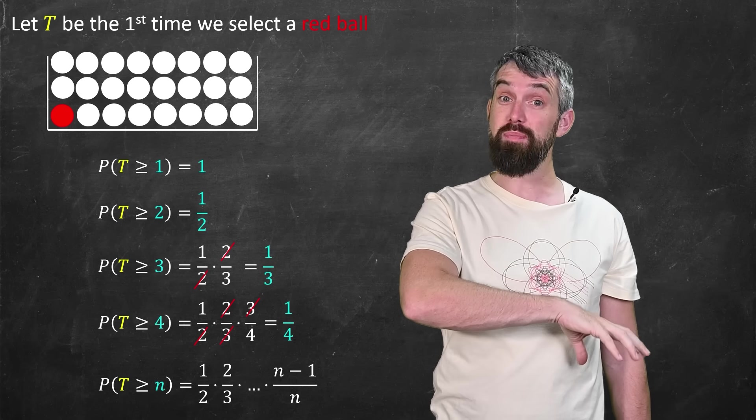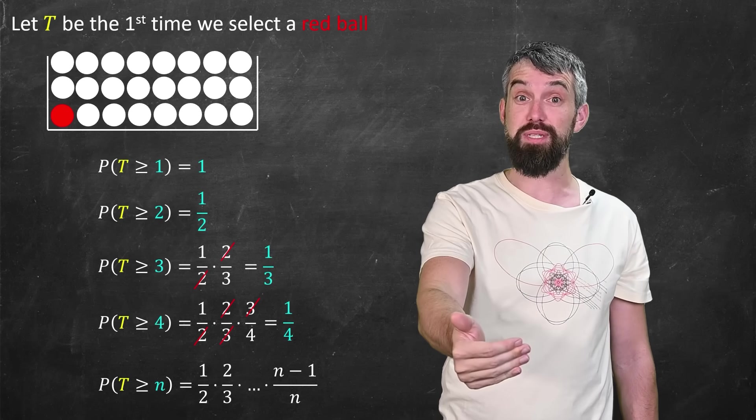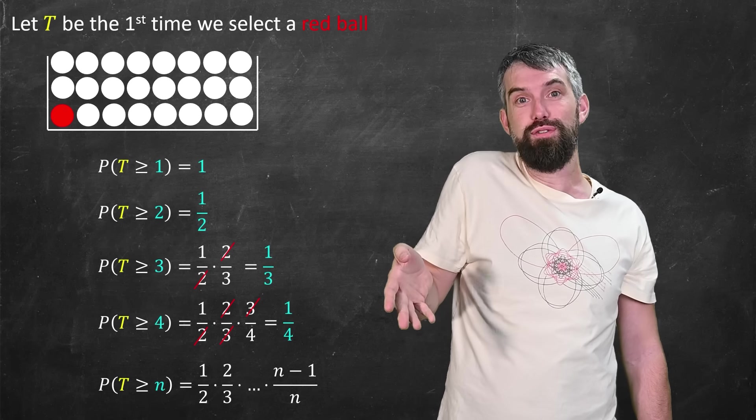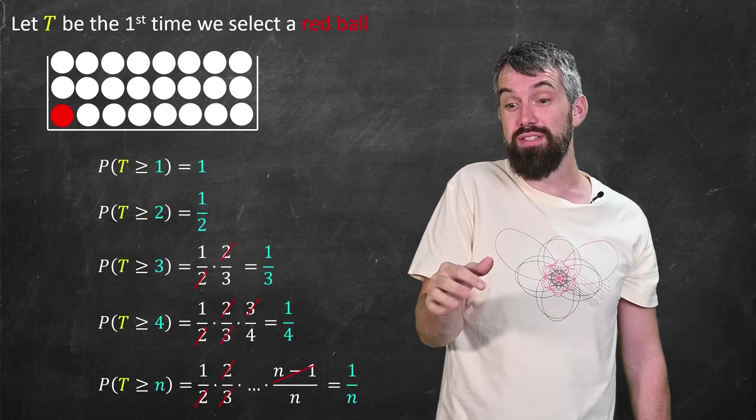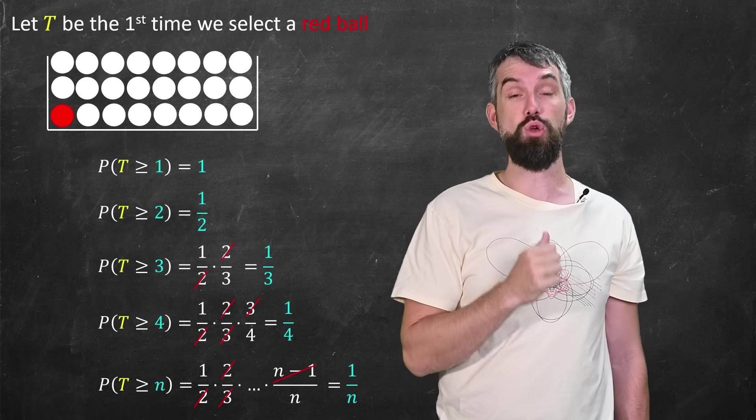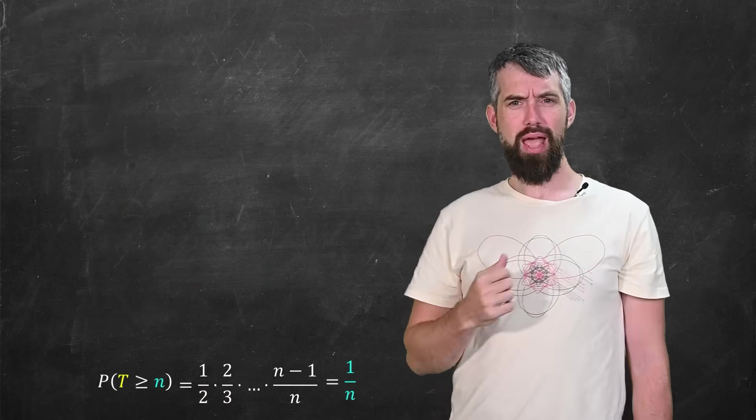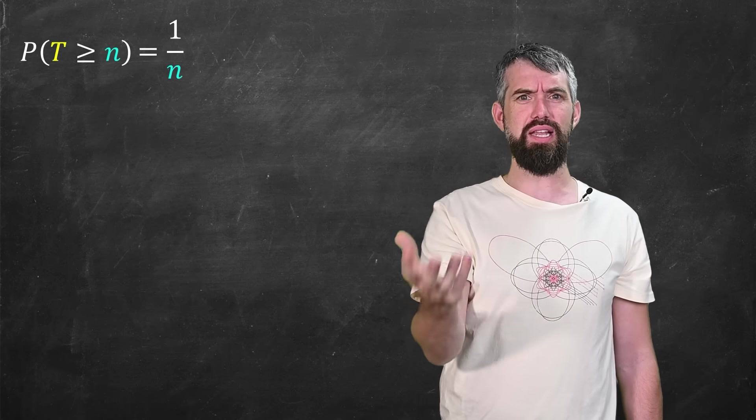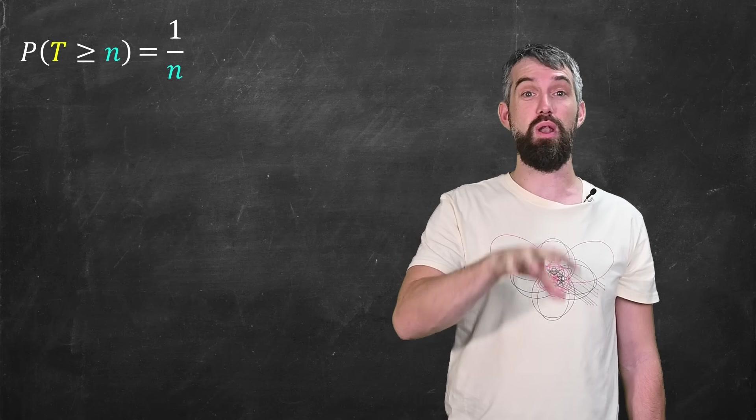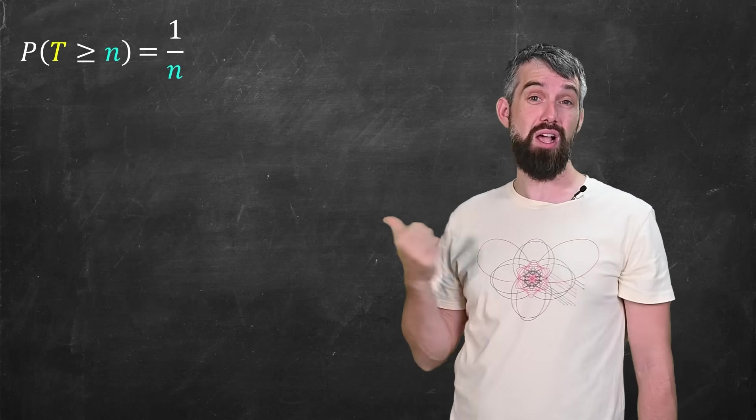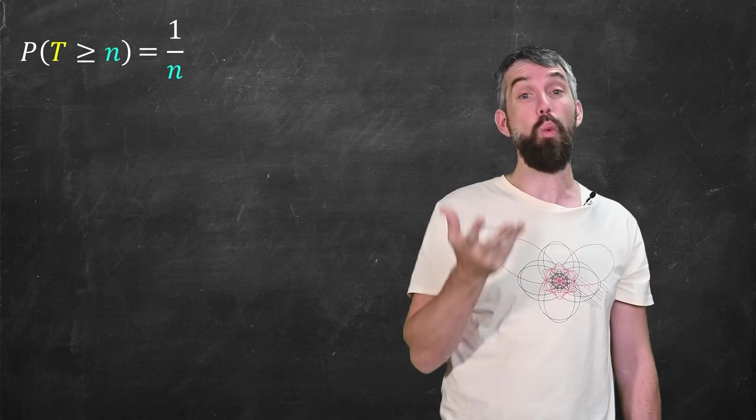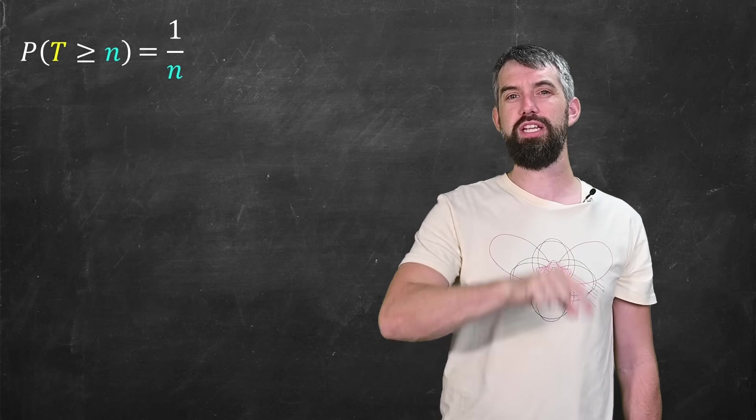And now I think I see the pattern. If I have a whole bunch of balls, the probability that it takes at least n steps is the multiplication of all those factors or the final n minus one divided by n. Almost everything cancels and I'm just left with the value of one divided by n. And one over n makes sense. This is a number that as n gets larger, gets smaller and smaller. So something really unlikely like a whole bunch of whites, that's not going to happen all that often. Just a one over n probability.